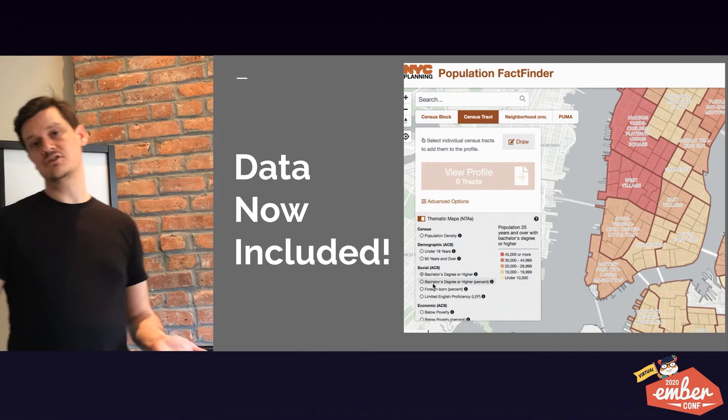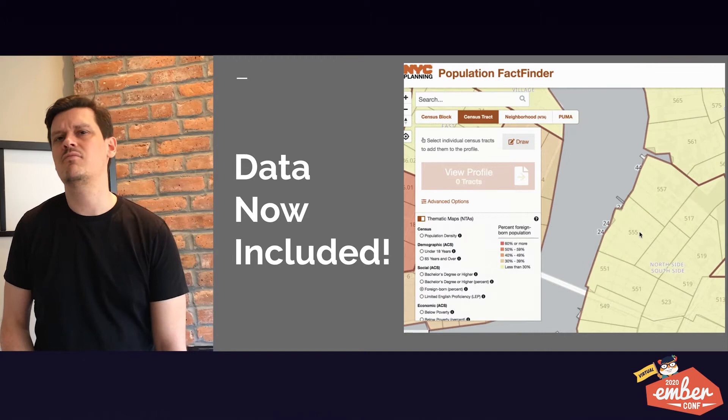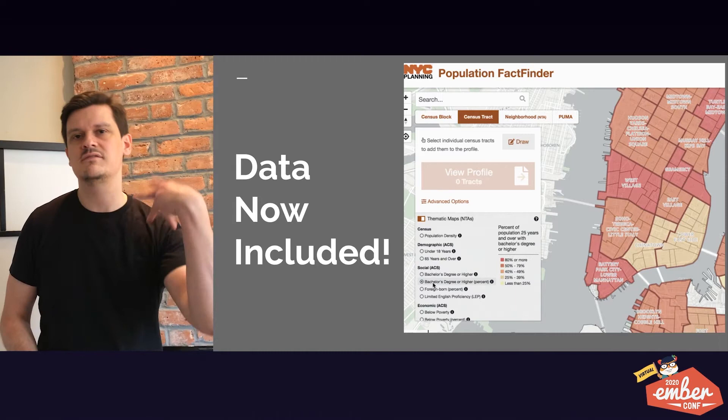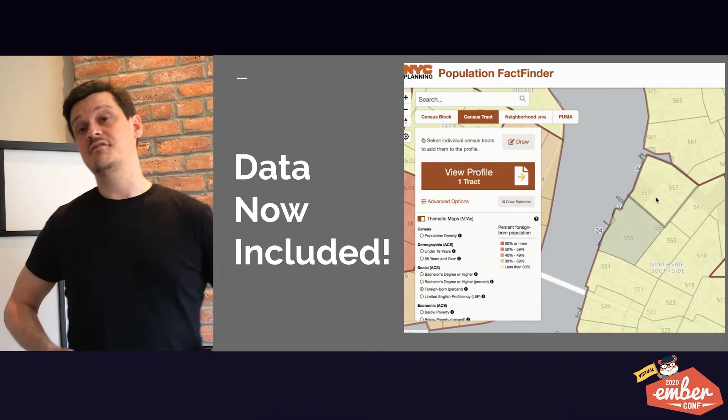In addition to being able to do the styling, the vector tiles also include all the data. What you're looking at here is probably a choropleth of percent foreign-born or percent population under 60 — switching between different choropleth mappings of different statistics. The reason these can be rendered and styled on the fly is that all the data is actually present inside the vector tile itself.